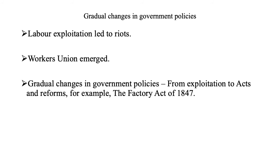There were some gradual changes in government policies during the Industrial Revolution. Labor exploitations led to riots, workers' unions emerged, and gradual changes in government policies moved from exploitation toward acts and reforms. For example, the Factory Act of 1857 was enacted, and thereby we can see some changes in labor conditions since the Industrial Revolution.